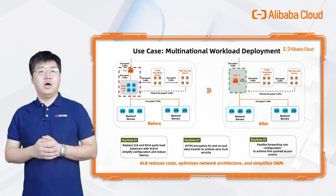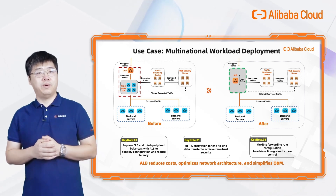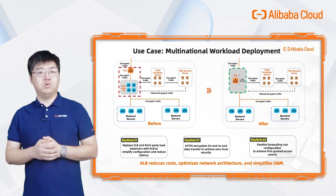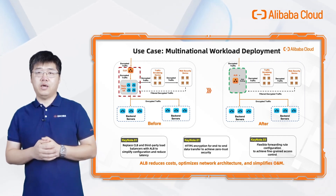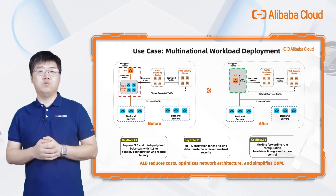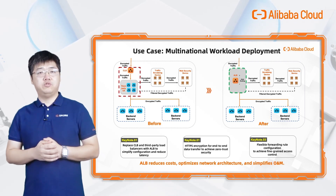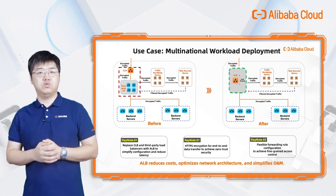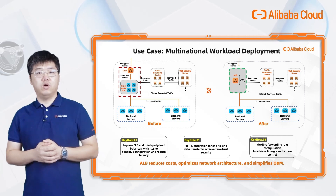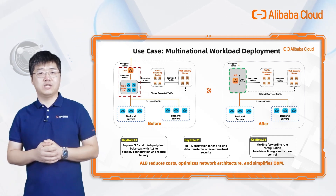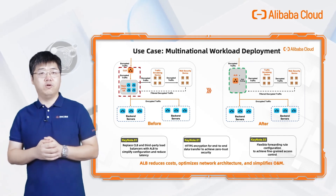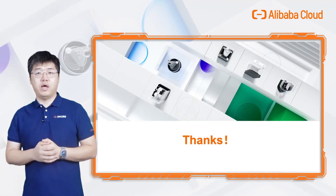Finally, let's look at a real user case. A multinational corporation built their application system on Alibaba Cloud using CLB plus a third-party ADC, which cost a lot. By replacing CLB and the third-party load balancer with a single ALB instance, they tremendously reduced costs. ALB performed HTTP encryption for end-to-end data transfer to achieve a zero-trust security architecture and meet compliance requirements. The flexible forwarding policy configuration of ALB enabled fine-grained access control of traffic. ALB has done a pretty good job in all aspects. Thanks for watching — I'm Benjamin Bryant, see you next time.